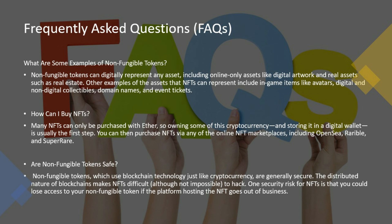Frequently asked questions: What are some examples of non-fungible tokens? NFTs can digitally represent any asset, including online-only assets like digital artwork and real assets such as real estate. Other examples include in-game items like avatars, digital and non-digital collectibles, domain names, and event tickets. How can I buy NFTs? Many NFTs can only be purchased with Ether, so owning some of this cryptocurrency and storing it in a digital wallet is usually the first step. You can then purchase NFTs via online NFT marketplaces including OpenSea, Rarible, and SuperRare.